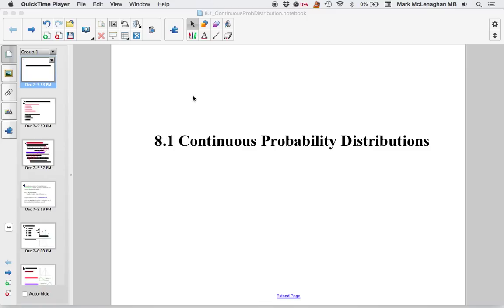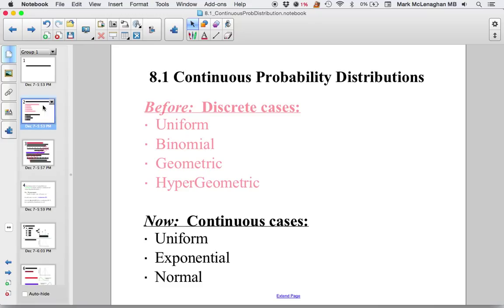Welcome to Chapter 8. We're looking at Continuous Probability Distributions. Remember the difference between discrete, which was Chapter 7, and continuous, which is Chapter 8.